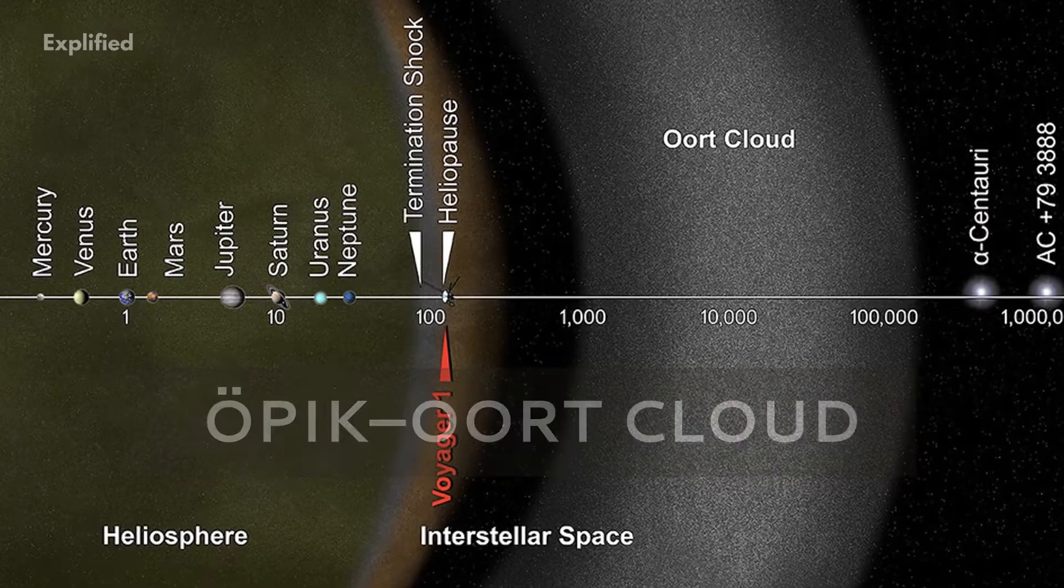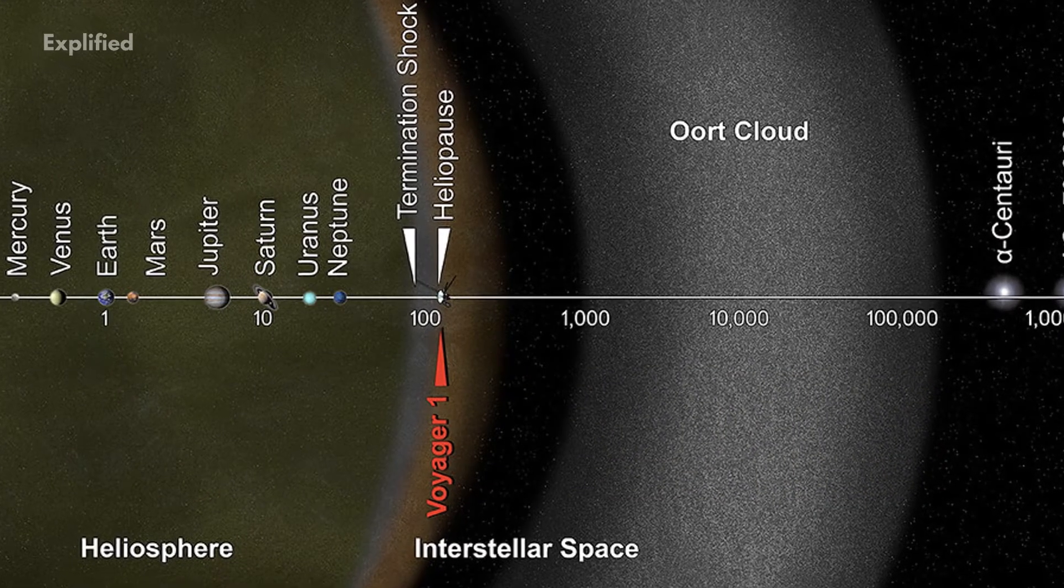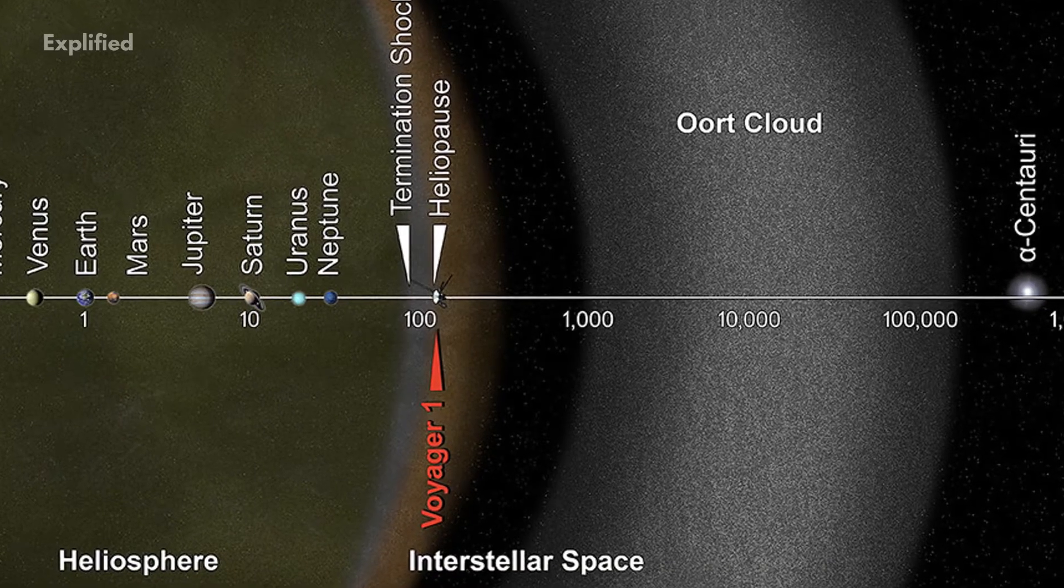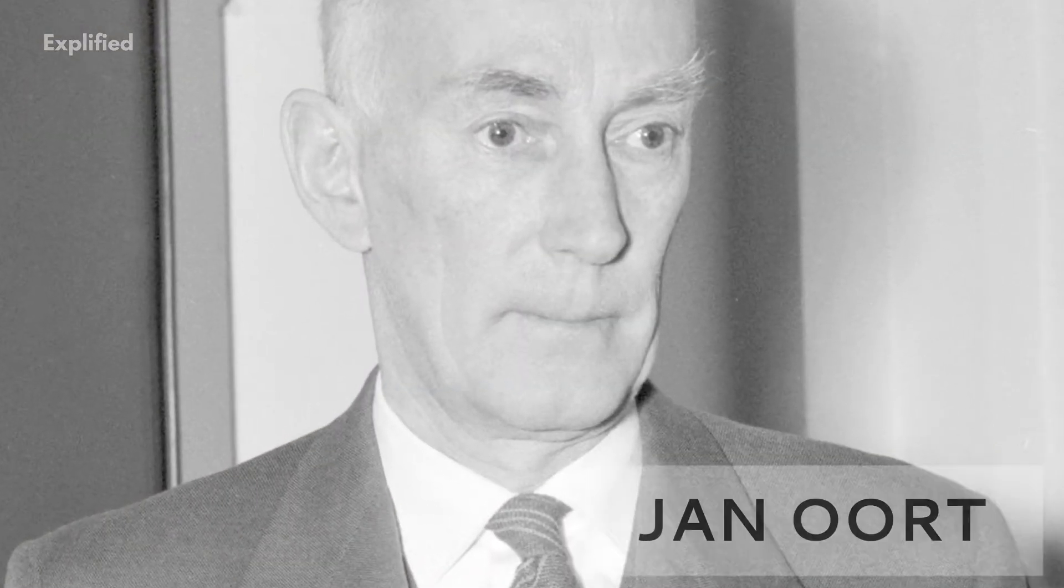Also known as the Öpik-Oort cloud, the Oort cloud is a hypothetical cloud of small, icy planetesimals, and is named after the Dutch astronomer Jan Oort.